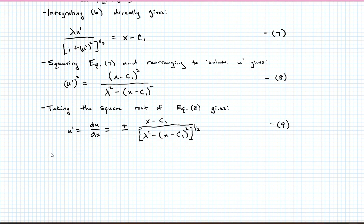Now I can integrate equation 9 directly to get the following. So the left-hand side just becomes u of x now, the right-hand side is going to be plus or minus lambda squared minus x minus c1, the quantity squared, plus c2. Let's call that equation 10.